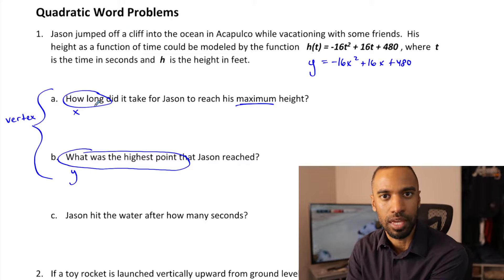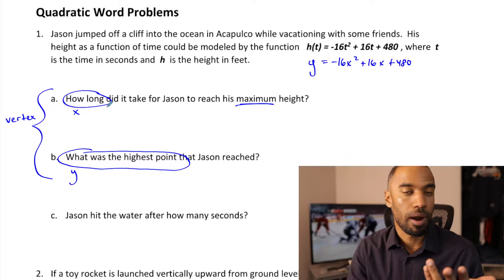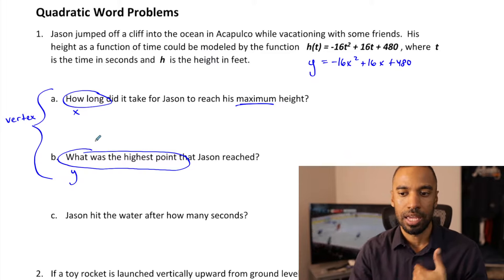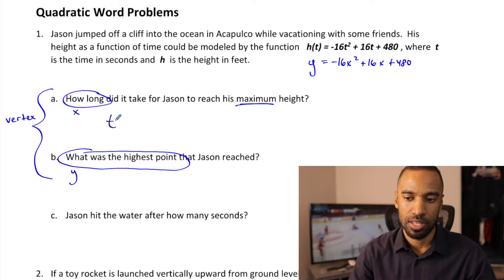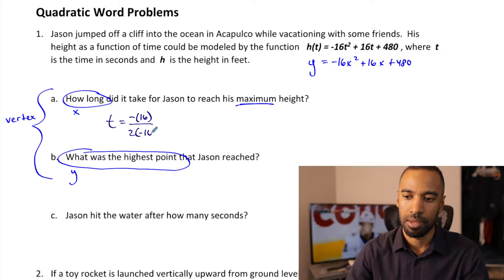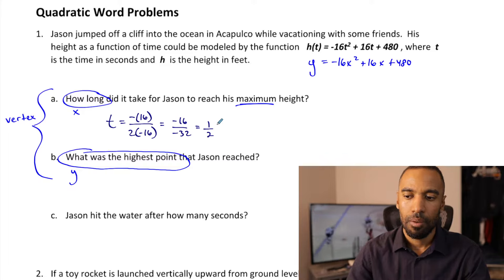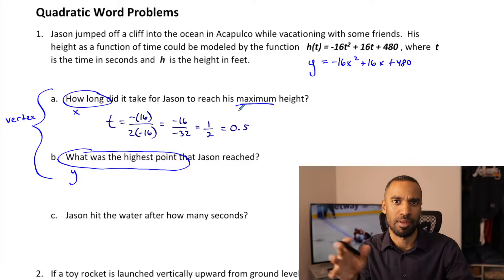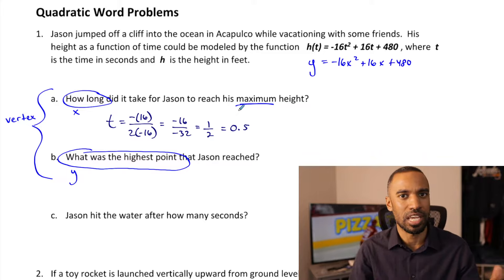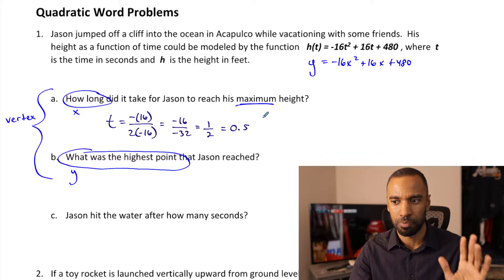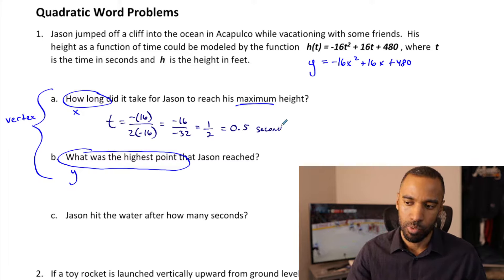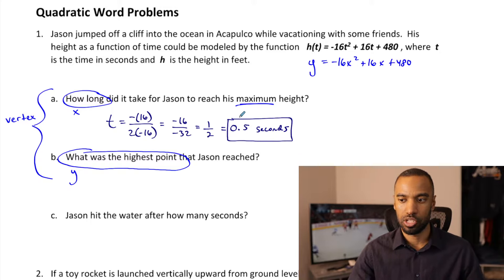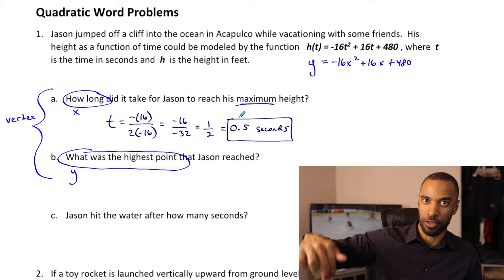One way to find the vertex is using negative b over 2a. The t value of the vertex is negative b over 2a: negative 16 over 2 times negative 16, which is negative 16 over negative 32, reducing to one half. I'm fine using decimals for these problems — so that's 0.5 seconds. Jason reaches maximum height 0.5 seconds into his jump. Half a second seems reasonable — we're not in the air for very long before hitting maximum height.